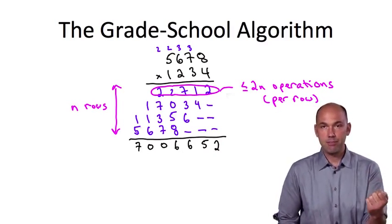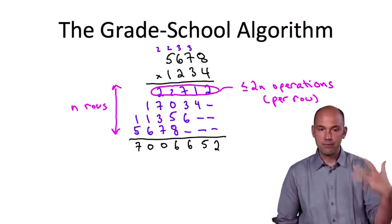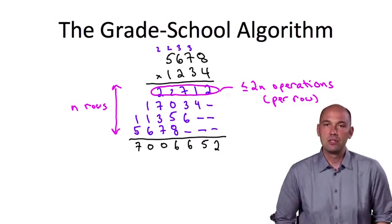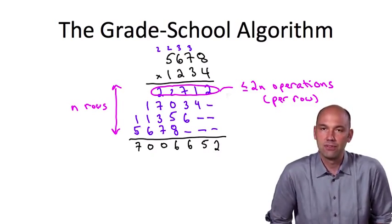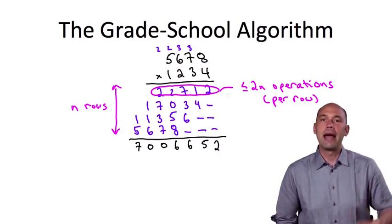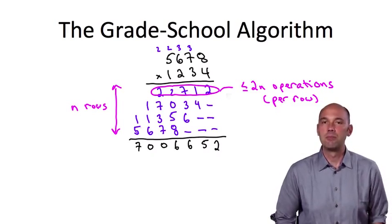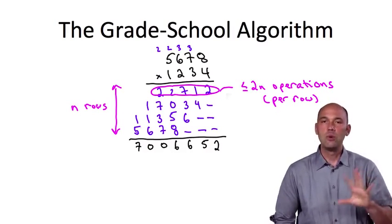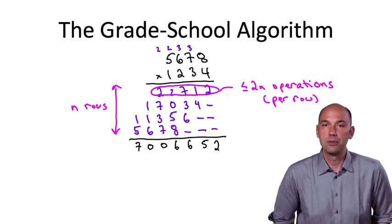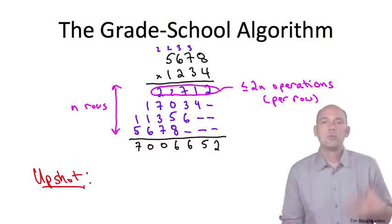Now, we're not done at that point. We still have to add all of those up to get the final answer. In this case, 7,006,652. And that final addition requires a comparable number of operations, roughly another 2n squared at most operations.